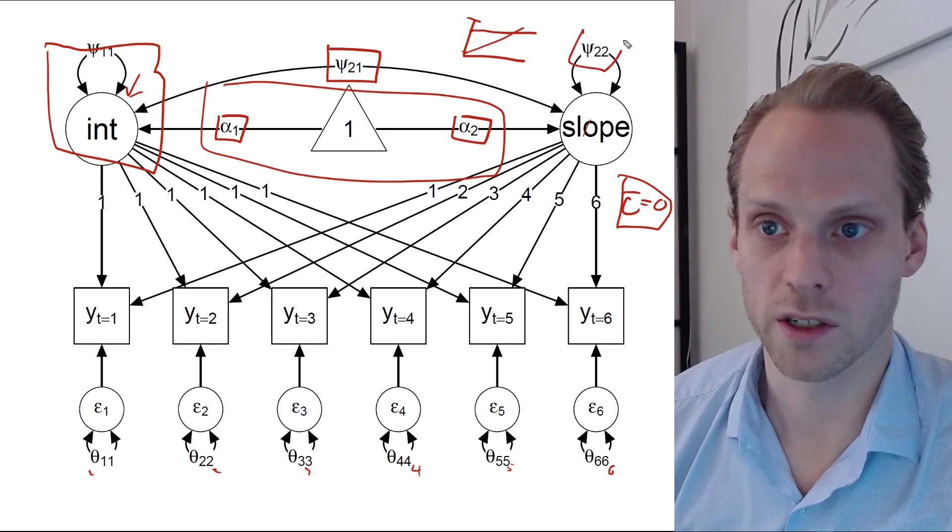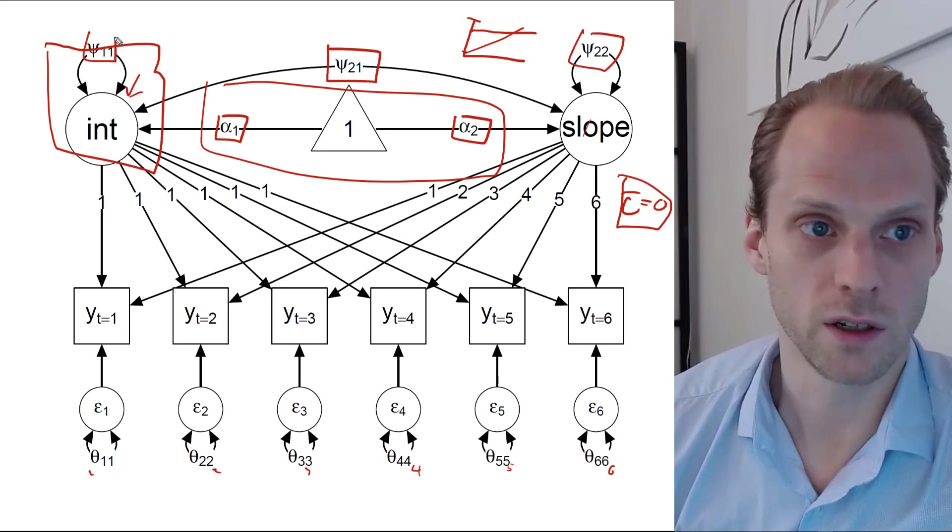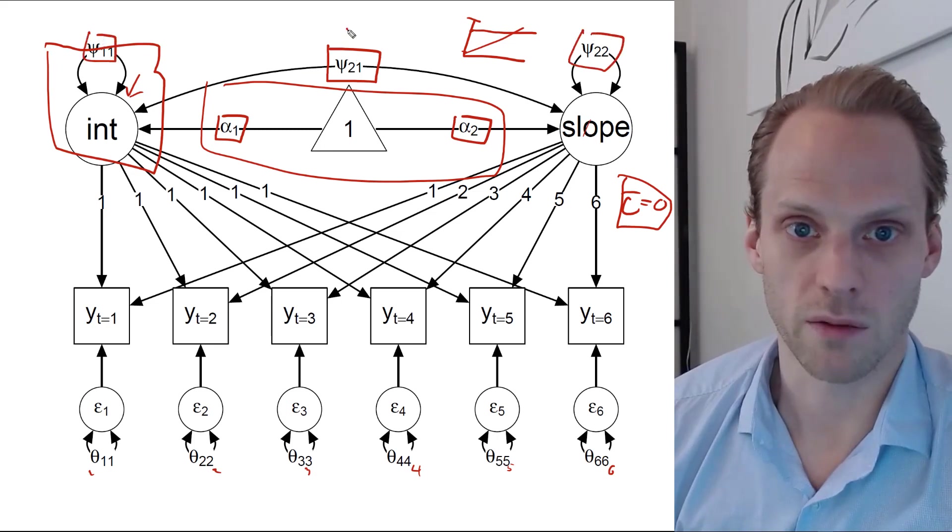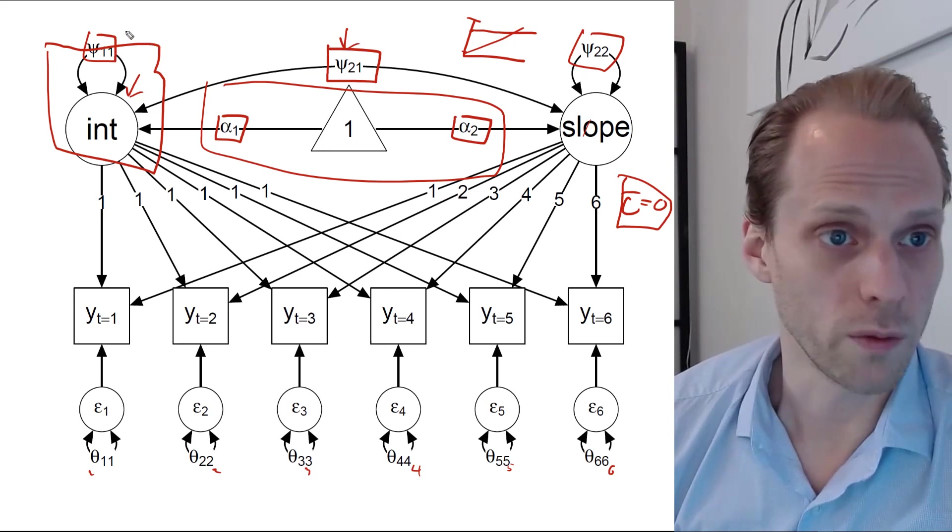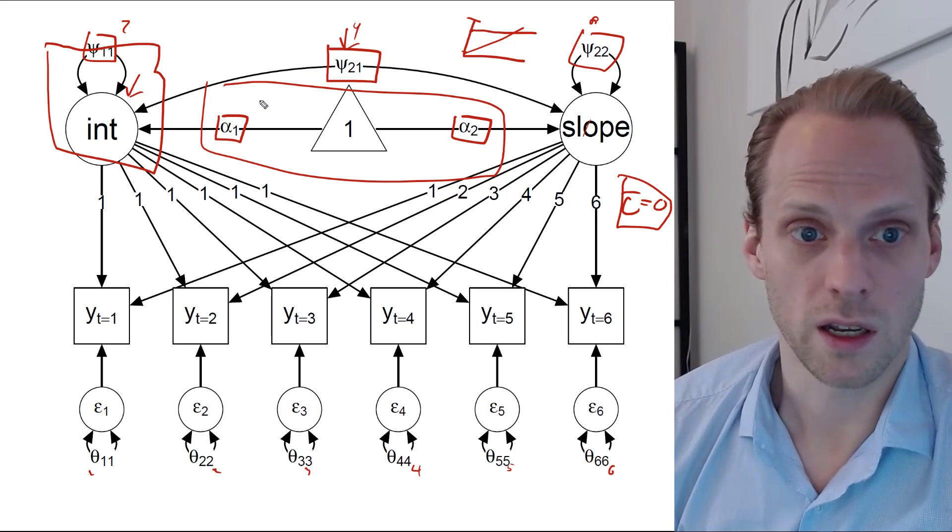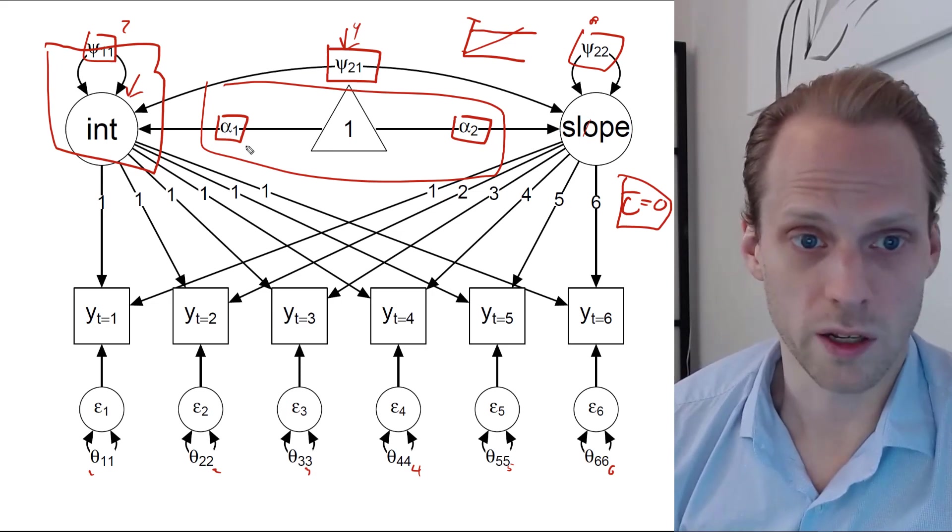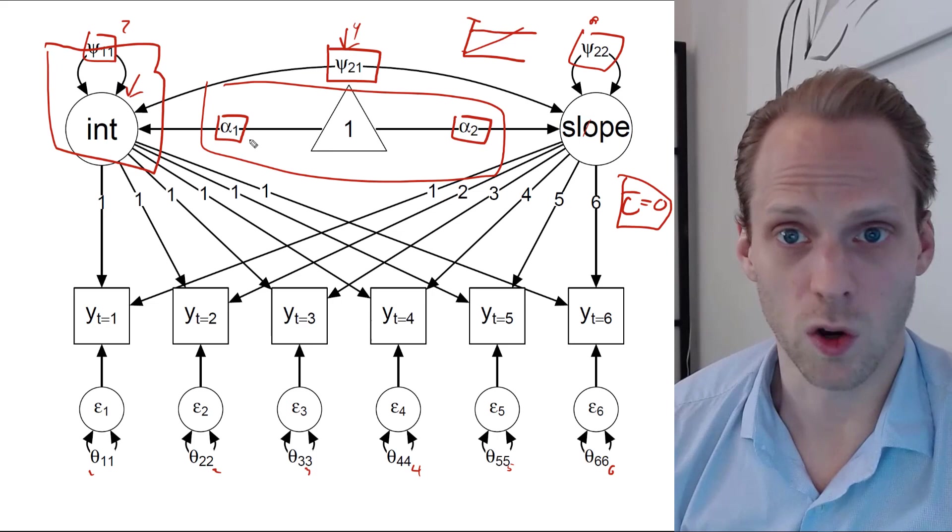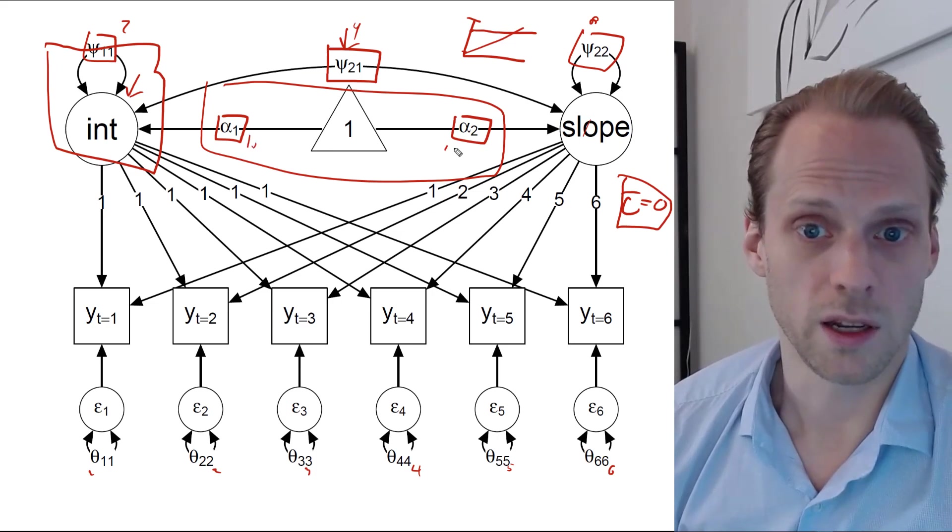We have a variance for the slope, we have a variance for the intercept, and we have a covariance, that's seven, eight, nine. And then we have two latent means, one for the intercept, one for the slope, so that's 10 and 11.